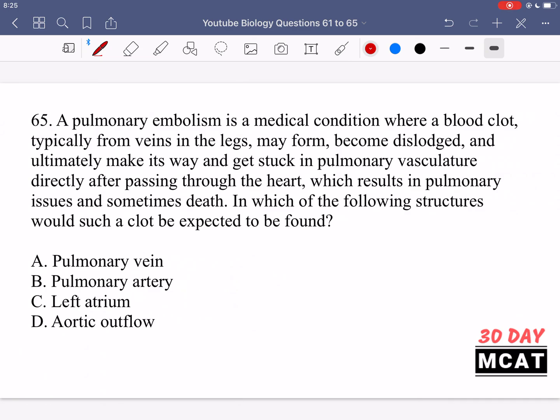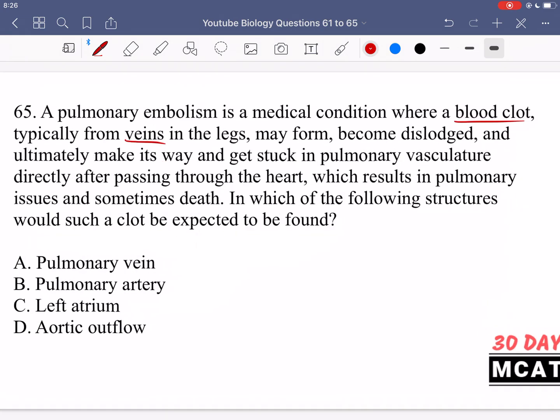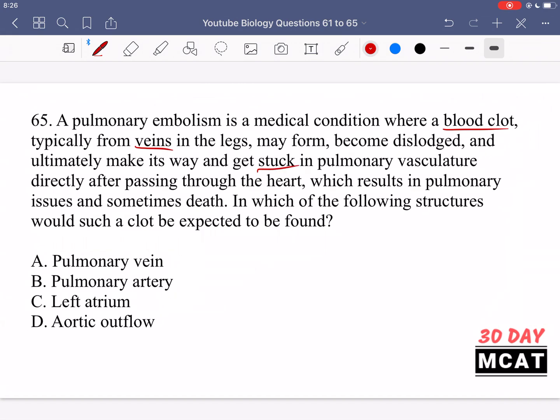In question 65 it says a pulmonary embolism is a medical condition where a blood clot typically from veins in the legs may form, become dislodged and ultimately make its way back and get stuck in pulmonary vasculature directly after passing through the heart, which results in pulmonary issues and sometimes death. In which of the following structures would such a clot be expected to be found? We're told that embolisms which are blood clots can form for example in a vein and then make its way back and get stuck after passing through the heart, and this results in pulmonary issues.